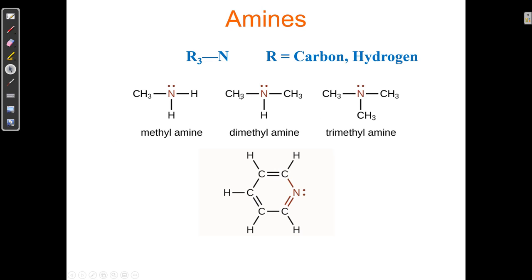Let's move on to amines. Amines are functional groups that contain a nitrogen atom. Here's an example — methylamine has two H's and a carbon. The general formula is R3N, where R could be a carbon or hydrogen. So this could be NH3 (ammonia) — the simplest amine. Nitrogen always has three bonds: it could have three H's, or one carbon and two H's, or two carbons and one H, or three carbons and no H's — all of those are amines.